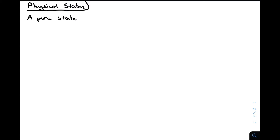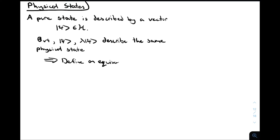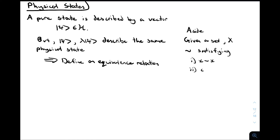Now that we know what a Hilbert space is, how do we describe the states of physical systems? It's usually stated in a quantum mechanics class that a pure state — one with no classical uncertainty — is represented by a vector inside the Hilbert space. However, any two vectors that differ by multiplication by a constant both describe the same physical state. So we can use this to define an equivalence relation. Given a set X, a relation is a way of comparing two elements: the statement X tilde Y is a proposition that can be true or false.